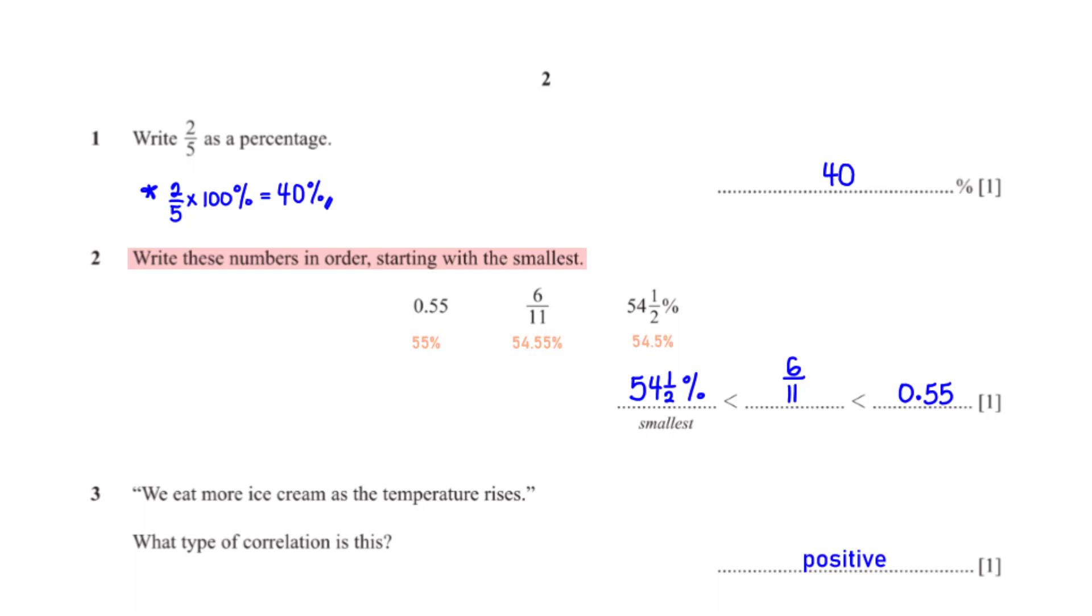Write these numbers in order, starting with the smallest. To be able to compare the numbers, we convert them to a percentage by multiplying each number by 100%. The smallest percentage is 54.5%, which is 54 and 1 over 2%, followed by 54.55%, which is 6 over 11, followed by 55%, which is 0.55.